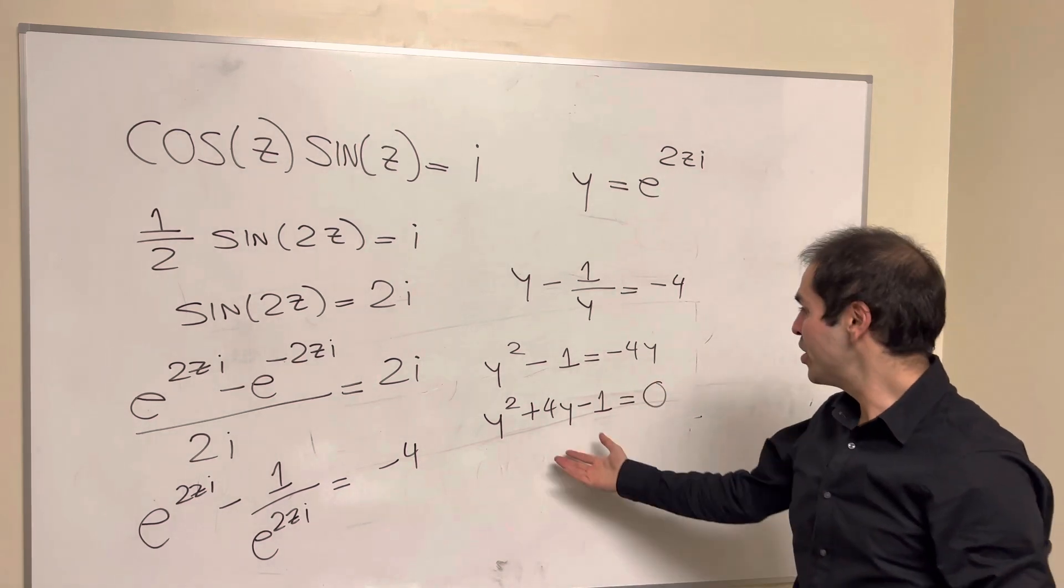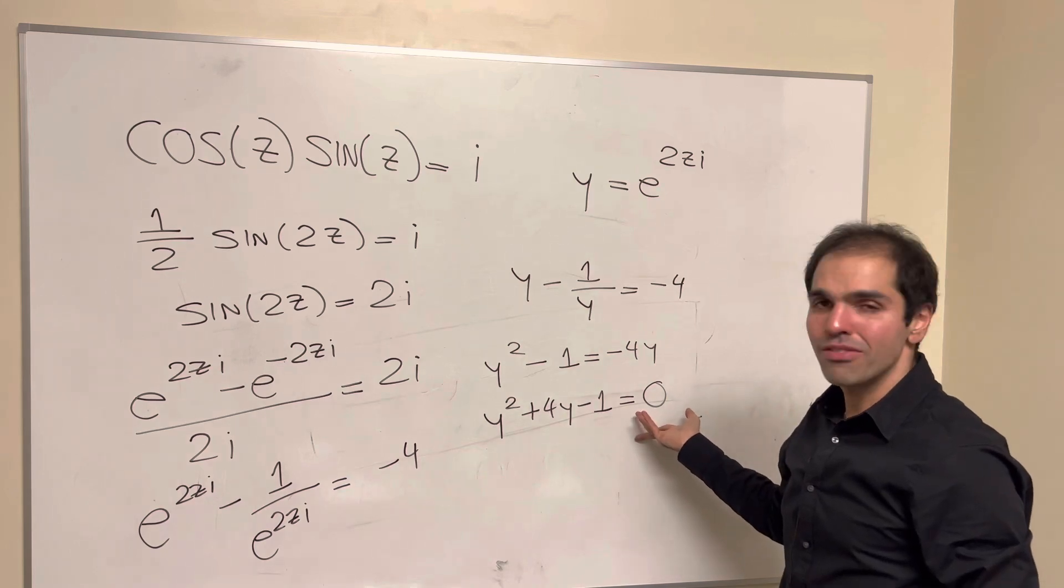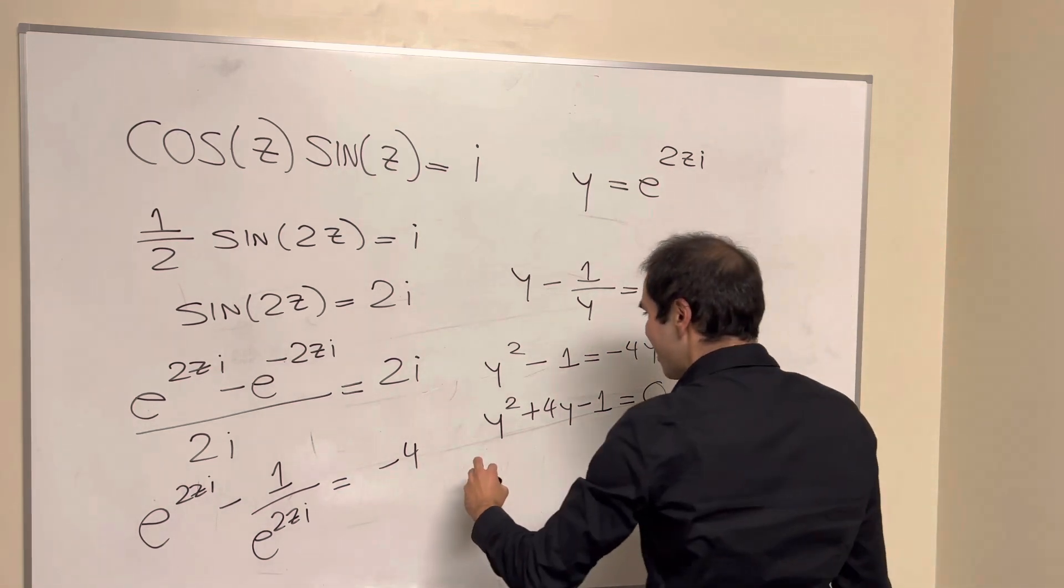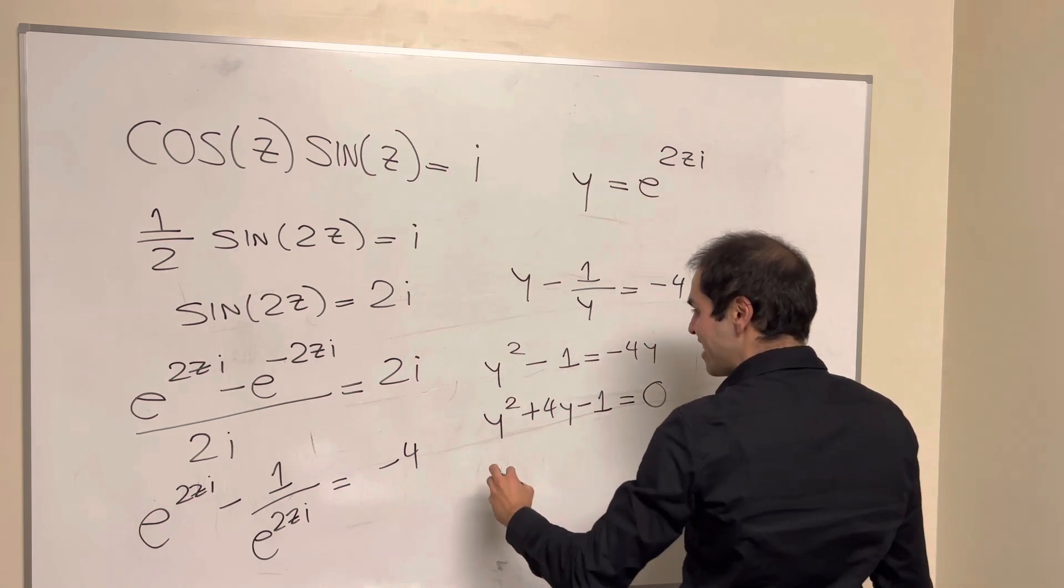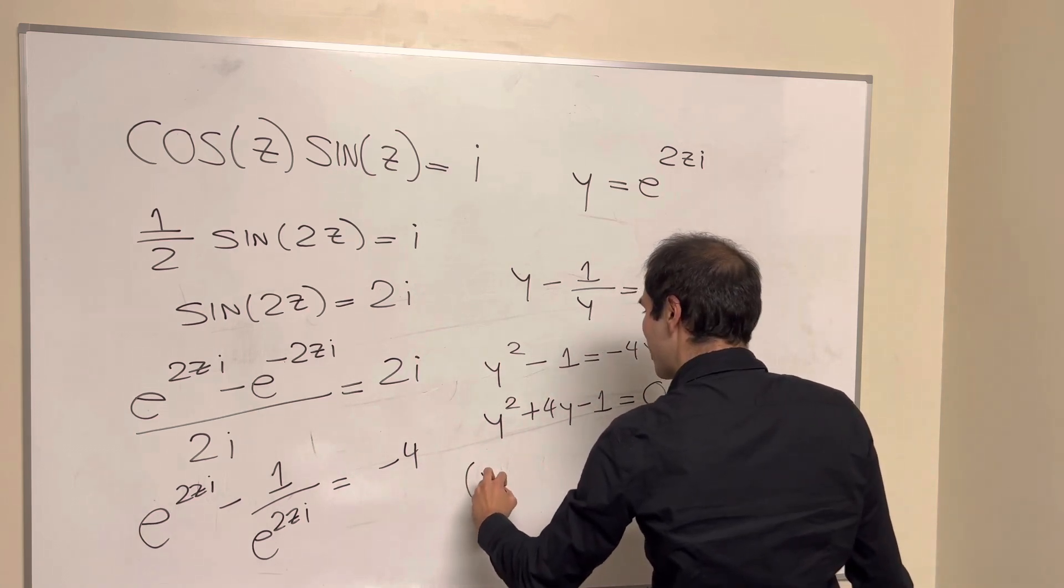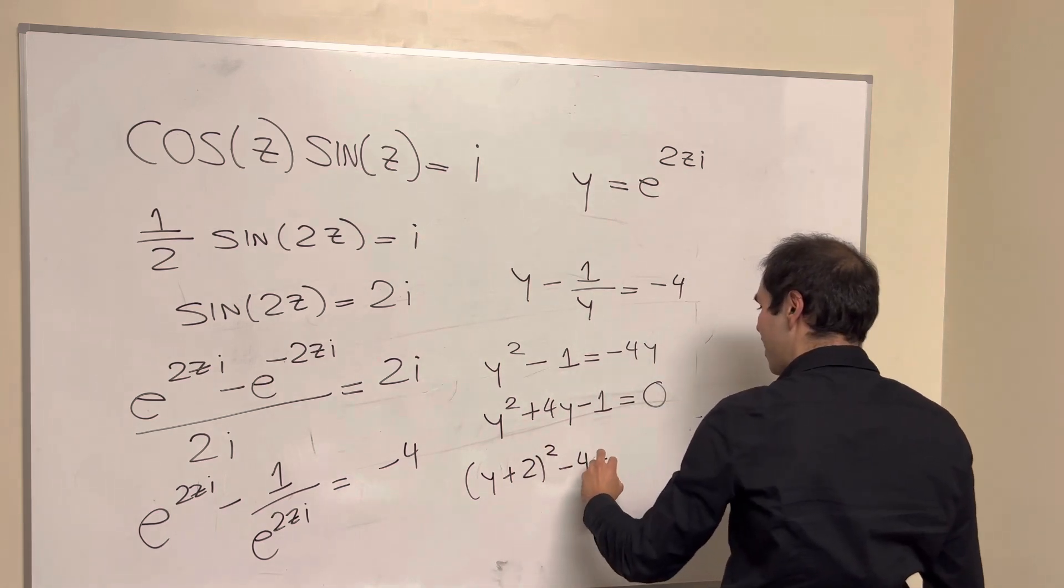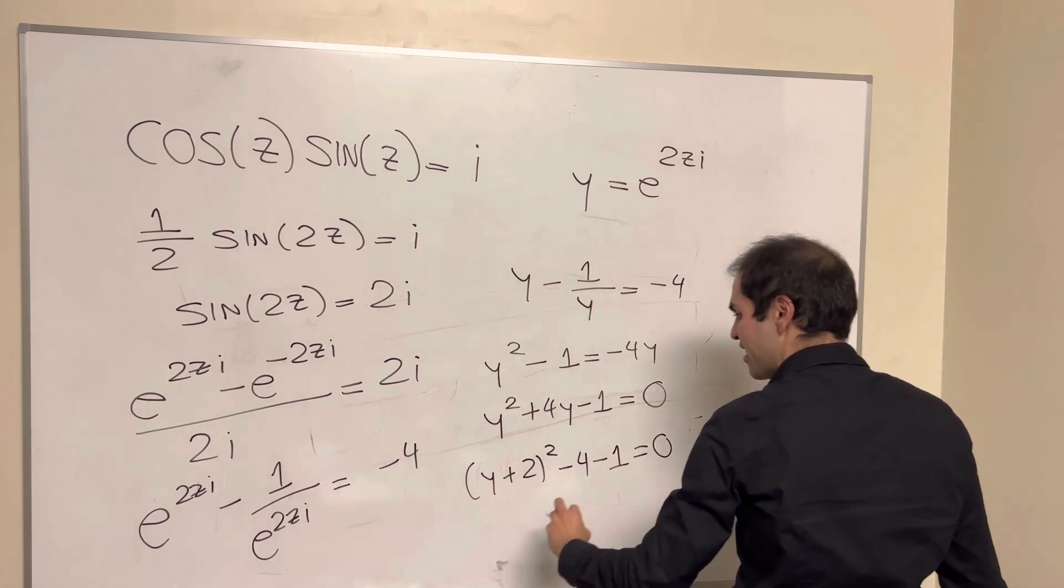So all you need to do is solve this quadratic equation and then find z. And in this case, completing the square, this gives you y plus 2 squared minus 4 minus 1 equals 0.